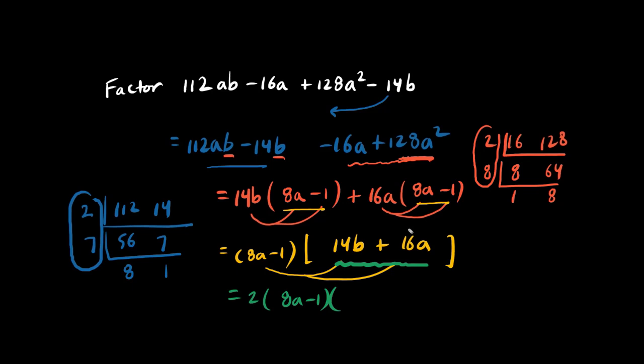And because we pulled out a 2 from this giant factor, we have half the result, which is 7b plus 8a. Now we have it, the fully factored form.